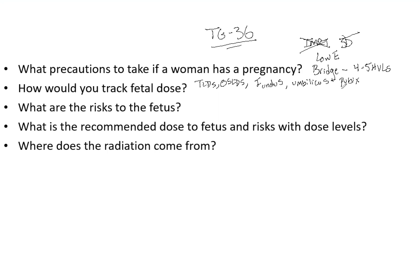Since the fetus could be near any of those three locations, having three readings better estimates the actual fetal dose. Remember those three placement sites — they are specified in TG-36 and examiners will look for them. As for risks to the fetus, keep it simple: malformations, mental retardation, and future cancers.